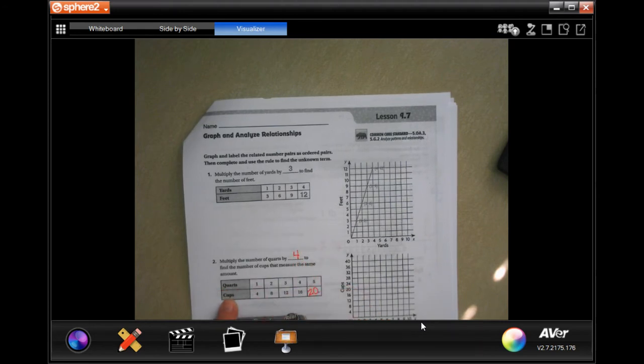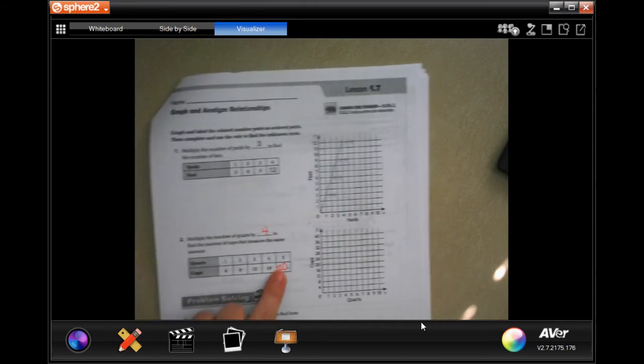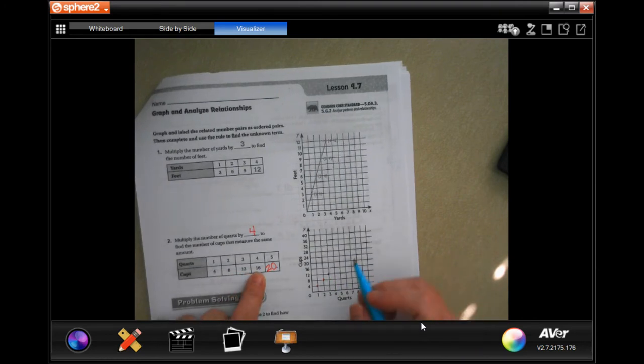Now we're going to plot those really fast. Over one, up to four. Over two, up to eight. Over three, up to twelve. Over four, up to sixteen, and then over five, up to twenty.